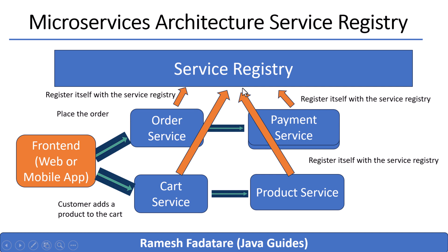What happens when services go down? Let's say one instance of the payment service crashes. No problem — the registry has health checks in place. If it stops hearing from that instance, it marks it as unavailable and removes it from the list. So when the order service asks for payment, it only gets working instances — no broken links, no timeouts. This is where service discovery really shines: it lets your system recover gracefully from failures. You don't need to redeploy or manually update addresses — everything adjusts automatically.